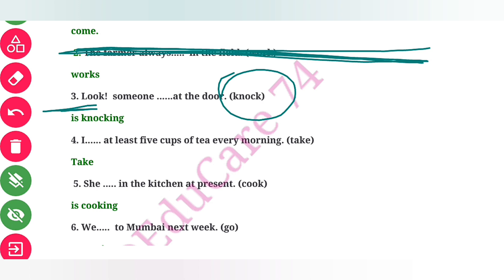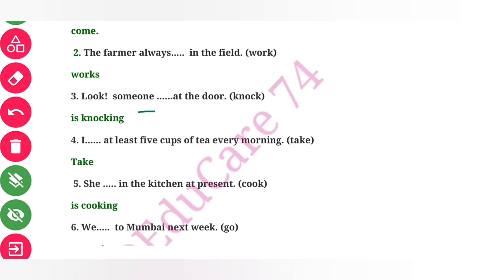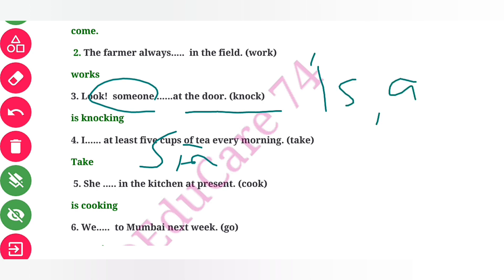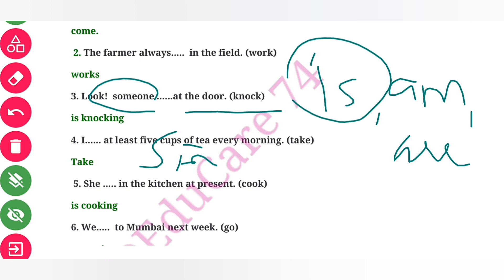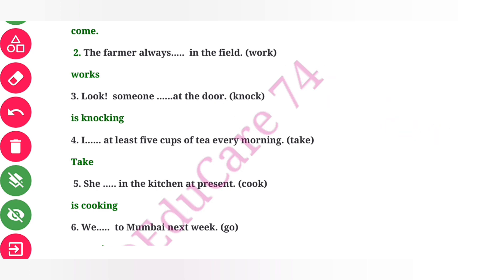The action that is going on continuously — 'someone' is a singular subject, so it is a continuous concept. With 'is' we add the ING form. So 'knock' becomes 'knocking' — someone is knocking. Now for question 4: I drink at least 5 cups of tea every morning.